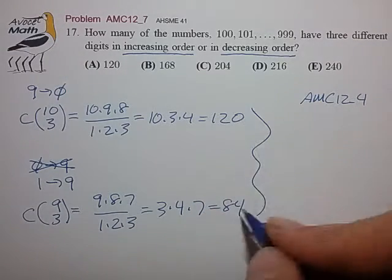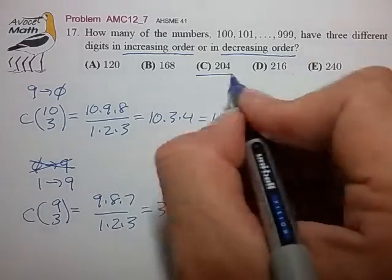Summing these two together, 120 plus 84 equals 204. That is choice C.